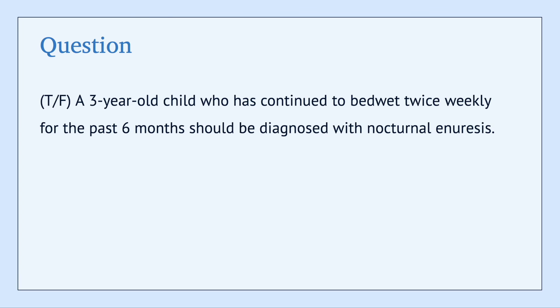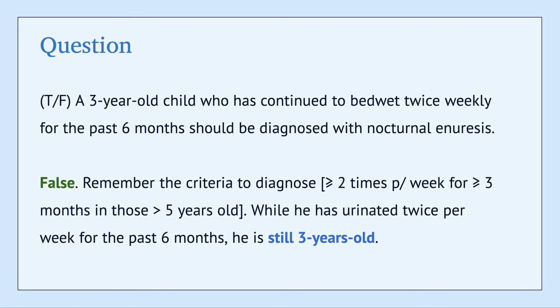Next up: a three-year-old child who has continued to bed wet twice weekly for the past six months should be diagnosed with nocturnal enuresis — true or false? This is false. Remember, the criteria to diagnose enuresis requires incontinence two or more times per week for a period of three months or greater in children who are older than five. This child has urinated twice per week for six months, but he's only three years old, so we wouldn't be able to diagnose enuresis.